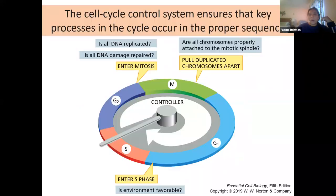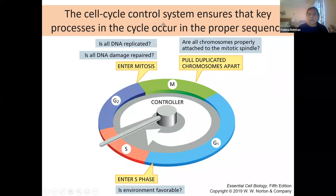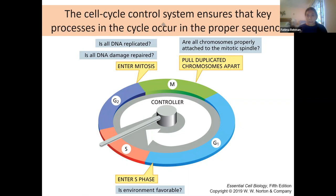What decides where a cell is in the cell cycle is a very complex cell cycle control system. This system looks at both the internal environment and health of the cell, and also takes into account environmental cues — the growth factors present, the inhibitory factors present — and the response is catered to all those signals combined.